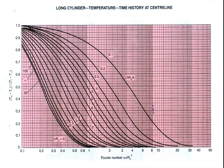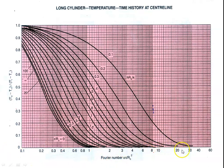This is the temperature history at the center of the cylinder. The x-axis is the Fourier number α·t/R₀², and the y-axis is the temperature ratio (T₀ − T∞)/(Tᵢ − T∞), with lines for different values of Biot number H·R₀/K. The Fourier number ranges from 0.1 to 35, so if the Fourier number is within this range we can comfortably use the chart for calculating the temperature distribution.